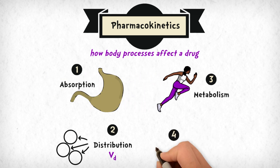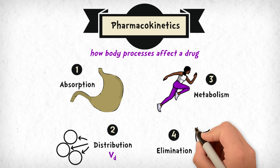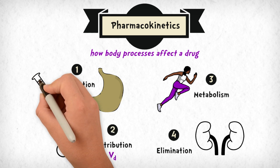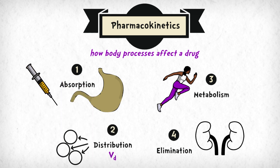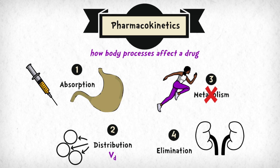And finally, elimination, which depends mainly on glomerular filtration in neonates, and to a lesser extent tubular excretion and reabsorption, because these processes take about two years to mature. We administer gentamicin intravenously, and it undergoes very little metabolism, so distribution and elimination will be the most influential phases.